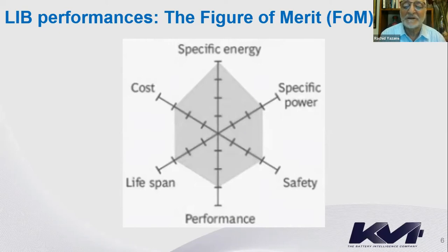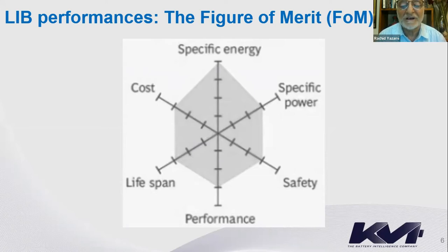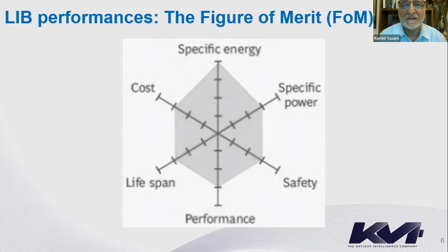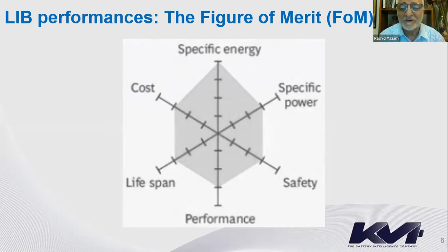The second figure of merit is specific power, expressed in watts per kilogram or watts per liter — it relates to how fast the battery can be charged and discharged, and in an electric car, determines speed and acceleration. Today the best batteries achieve around 1 kilowatt per kilogram, sometimes higher depending on the engineering. That converts to about 2.5 kilowatts per liter.